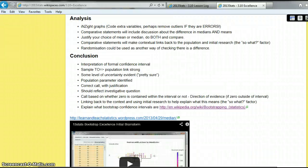With your conclusion, interpretation of formal confidence interval. So, that's what we're doing at the moment. We've got a sample to population link is strong. So, there's understanding that we're making a prediction from a sample to a population. Population parameter identified. So, that means you don't write the population. You actually have got to substitute, making it very clear that you know what the population is. Correct call should reflect the investigative question. So, you've got to answer the question. And the call is based on whether zero is contained in the interval or not.